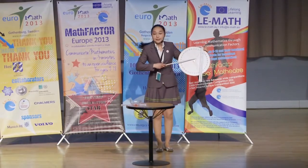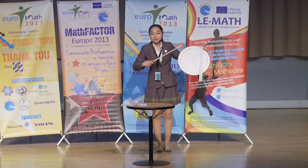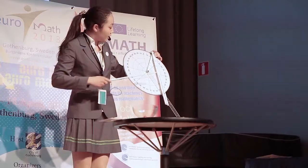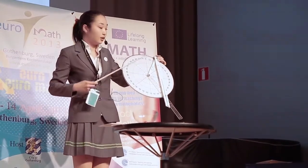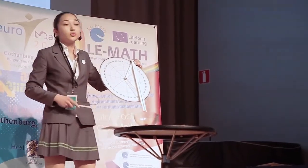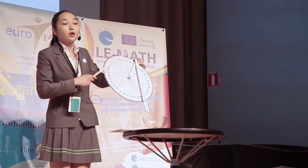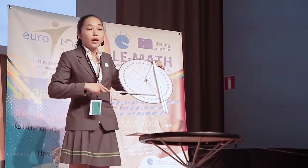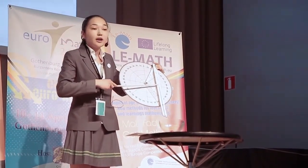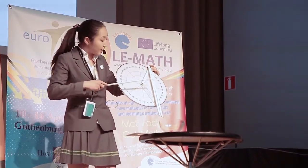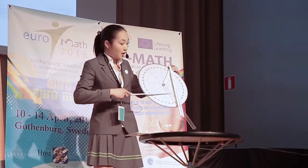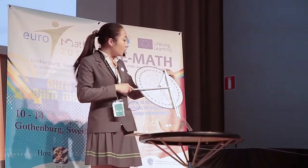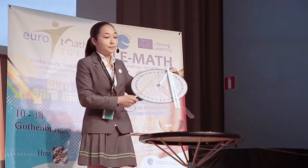Here, the bar C is weightless and has a length equal to the radius of the circle. The bar A has a length equal to 2R of the given circle, and the mass equal to M. The third bar B has the same length as the bar A, but the mass is twice as heavy, so it's equal to 2M.